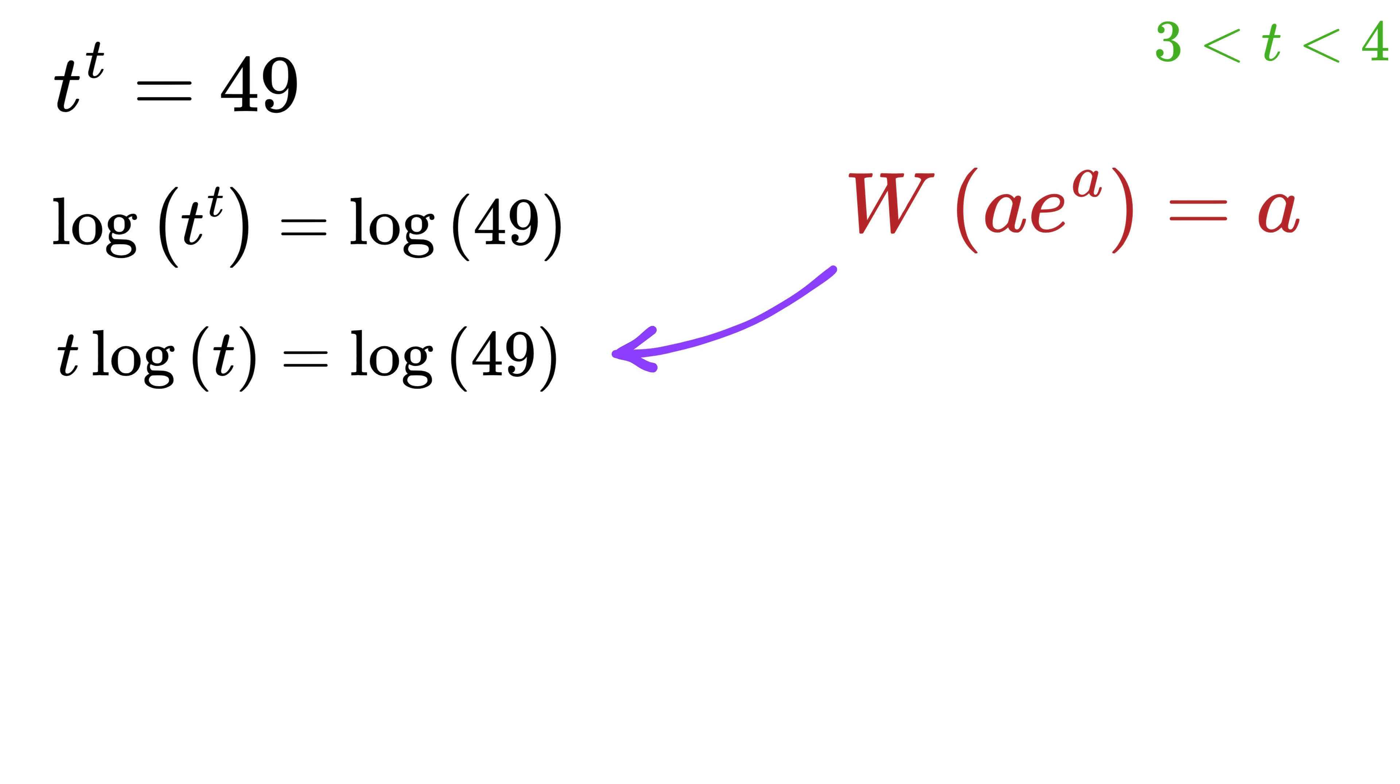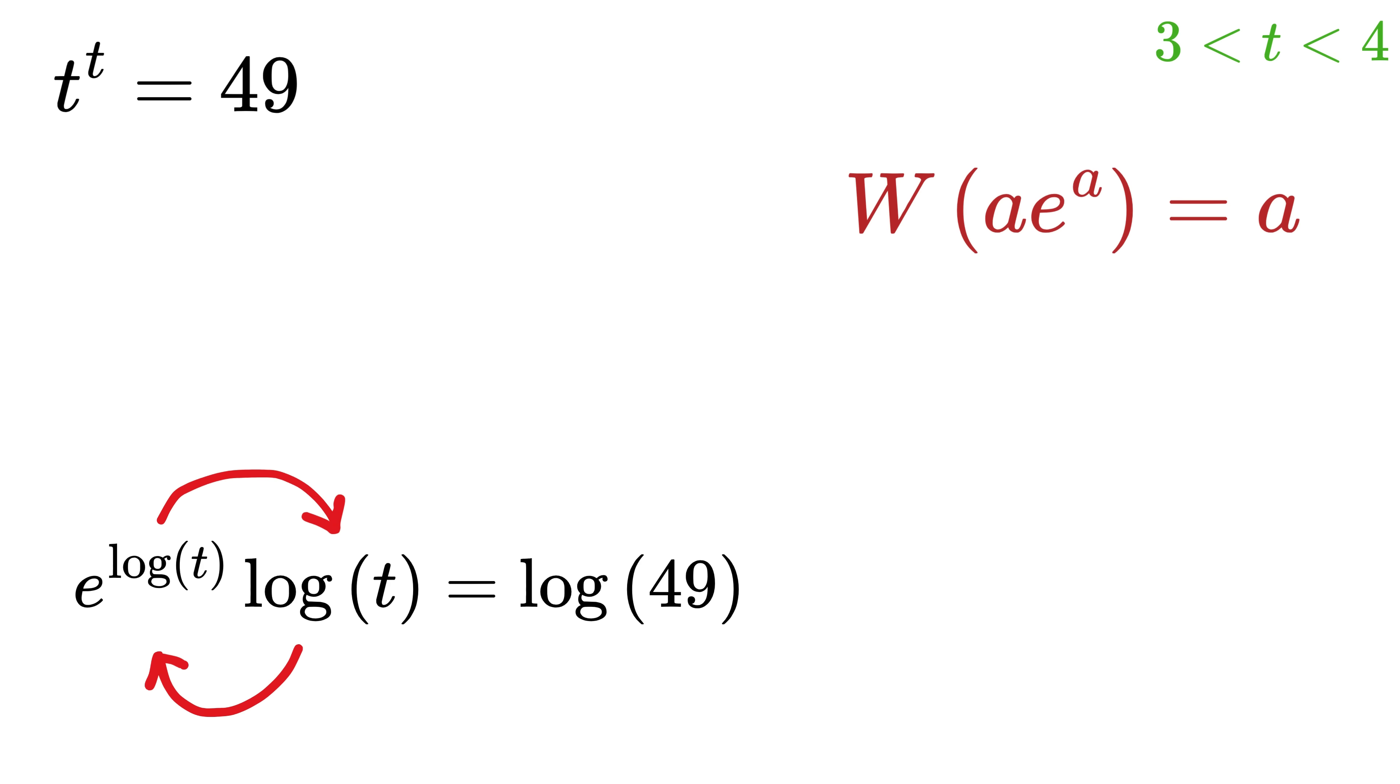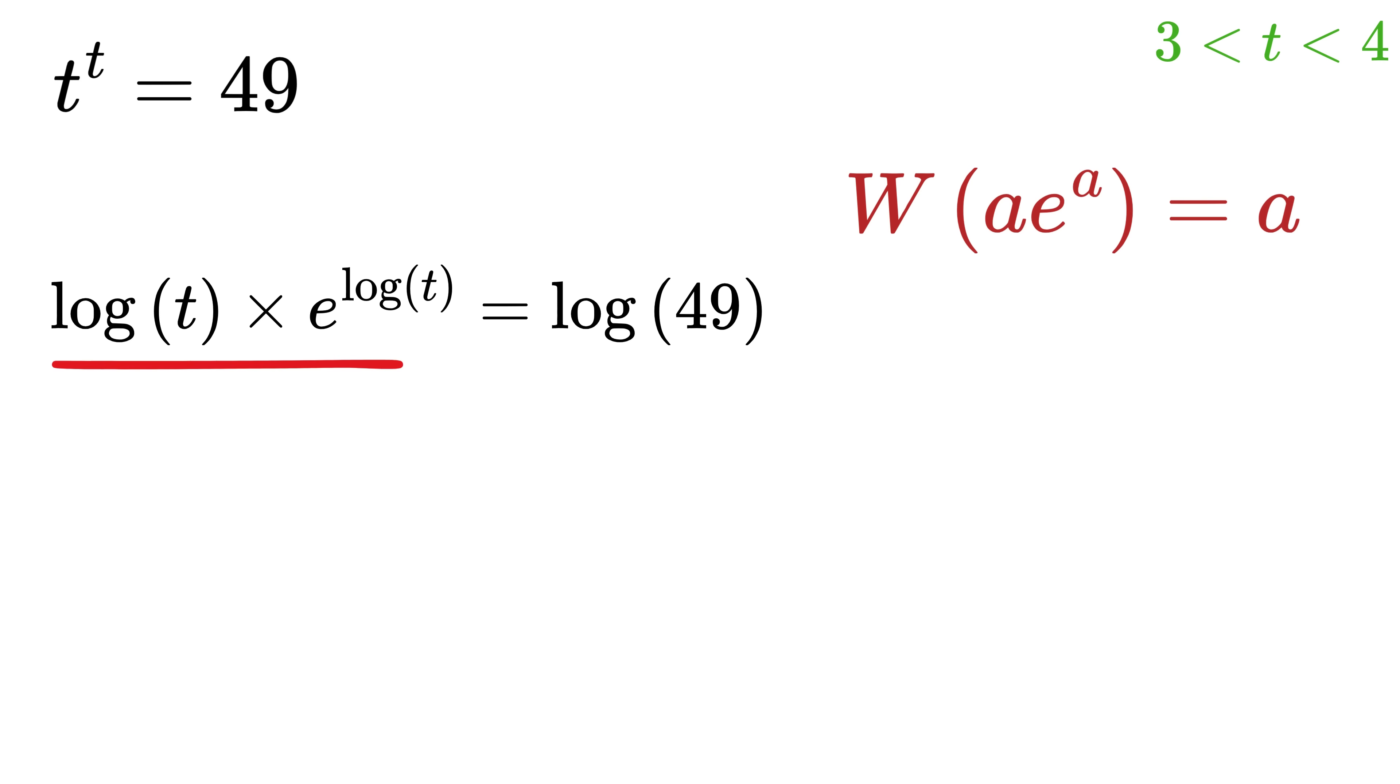Now we will use it in this expression. If you look closely, you do not have e in this expression, so we will have to convert this expression in terms of e. This is simple, as we can write t as e raised to the natural log of t. This times log of t equals log of 49. We can change the order and write it as log of t times e raised to log of t equals log of 49. Now, if you compare this expression with the earlier one, we have the value of a as the log of t, so we can easily apply the Lambert W function on both sides.